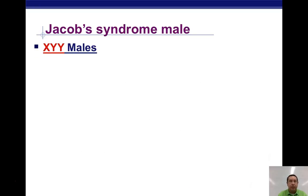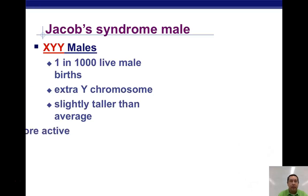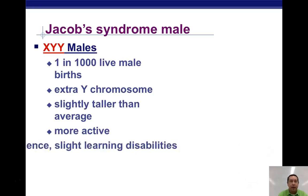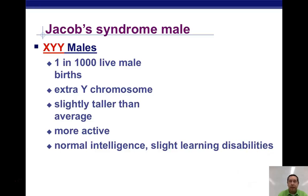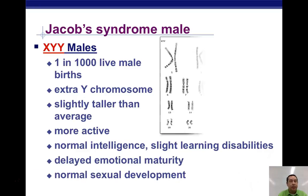XYY syndrome occurs in about one in 1,000 births. Those affected are slightly taller than average and more active, with normal intelligence to slight learning disabilities, delayed emotional maturity, but normal sexual development.